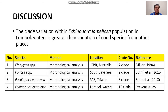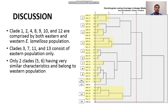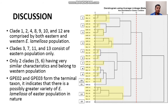The clade variation within Echinopora lamillosa population in Lombok waters is greater than variation in coral species from other places. We found 13 clades based on morphological analysis compared to other coral species from other locations. We also found that the eastern population is more varied compared to the western counterpart, with only 2 clades truly belonging to the western population. GPA 2 and GPA 3 form terminal taxa, indicating a possible greater variety of Echinopora lamillosa in the eastern population.